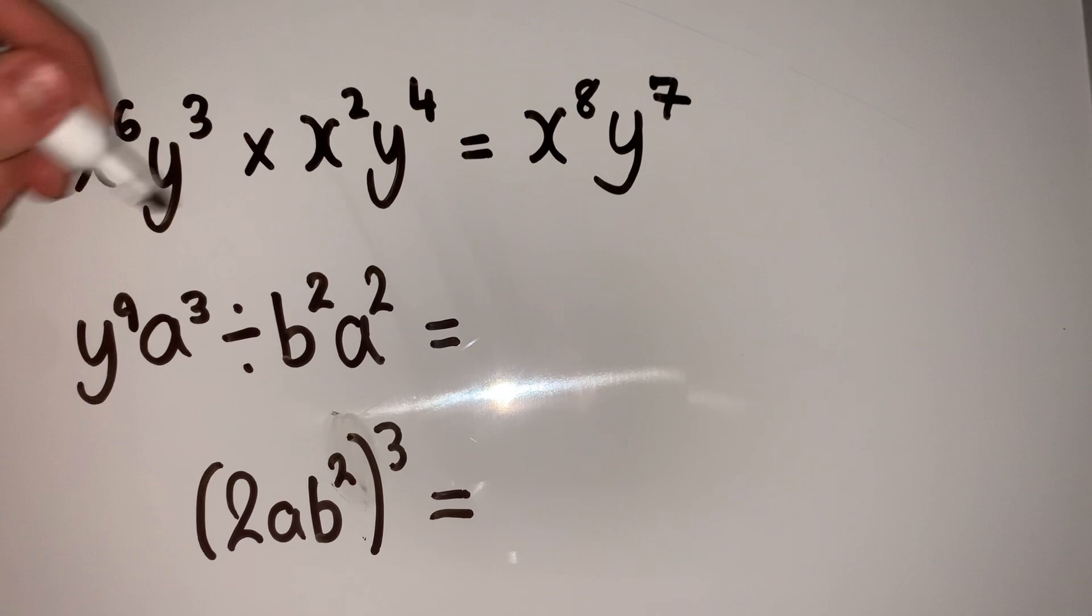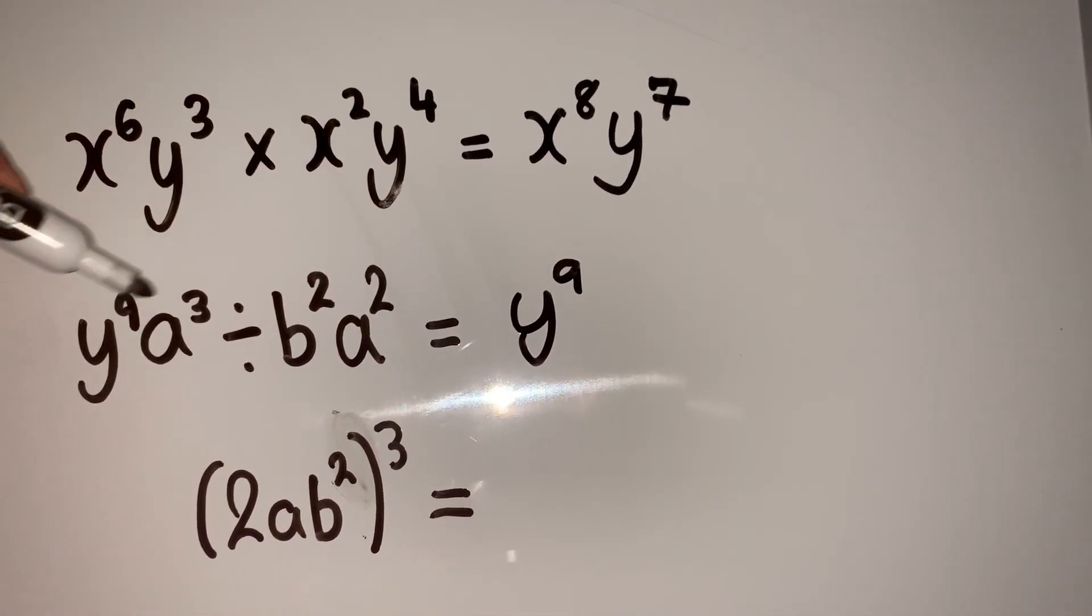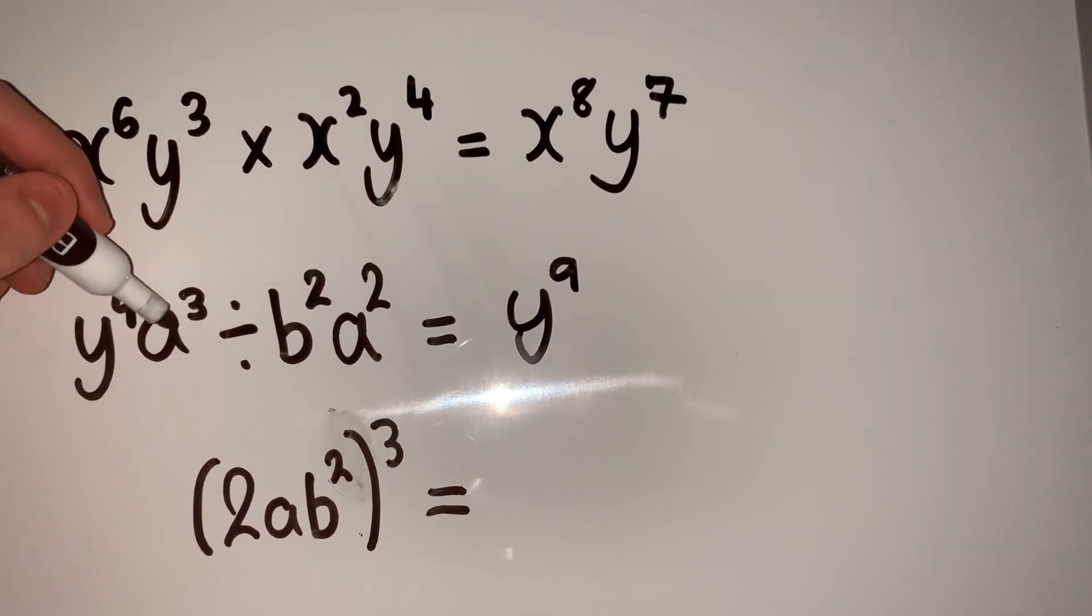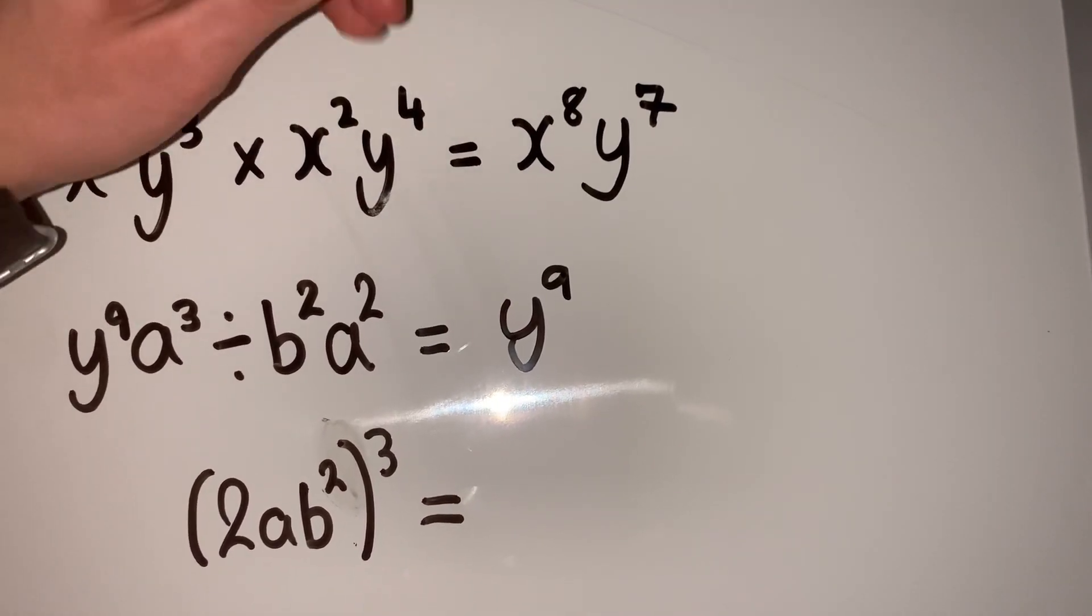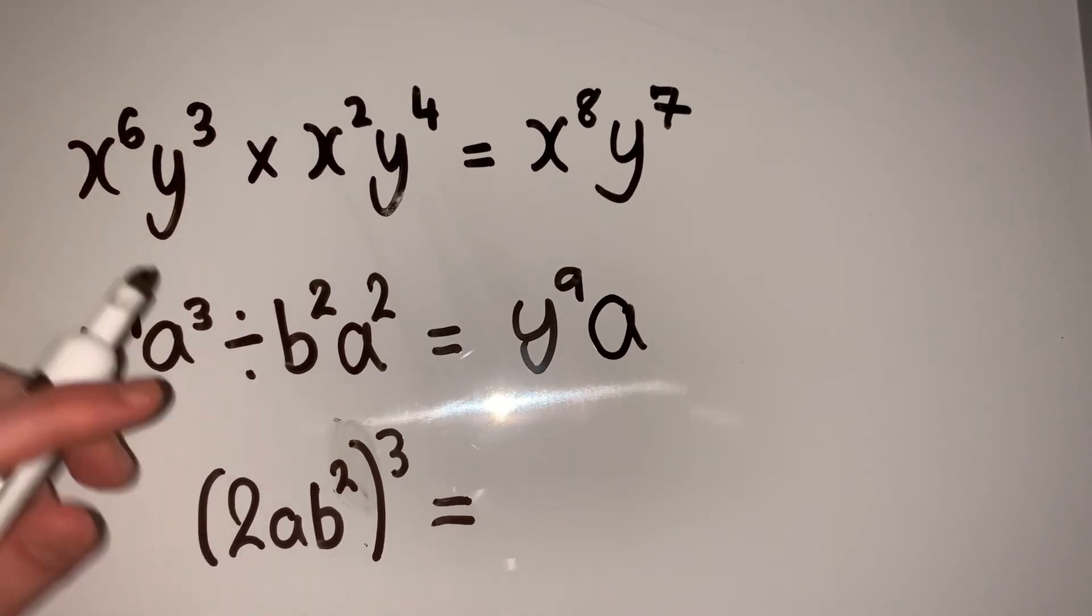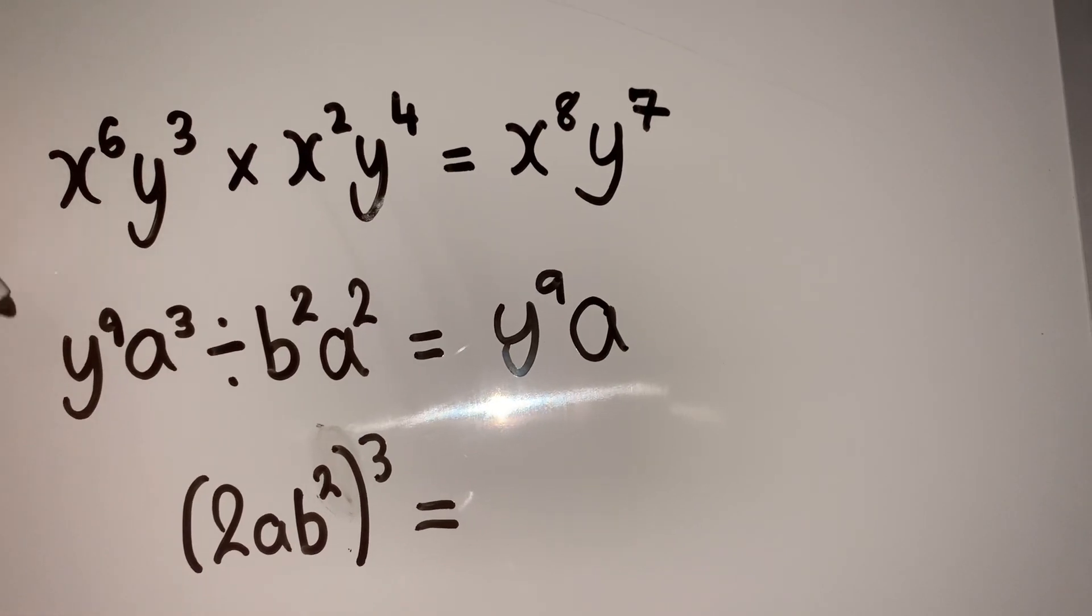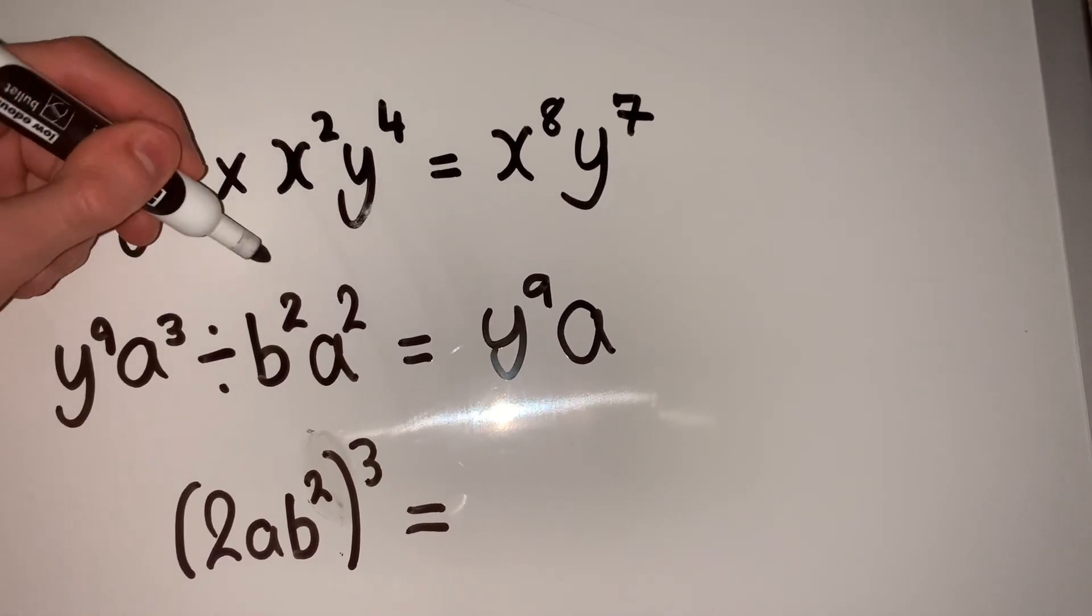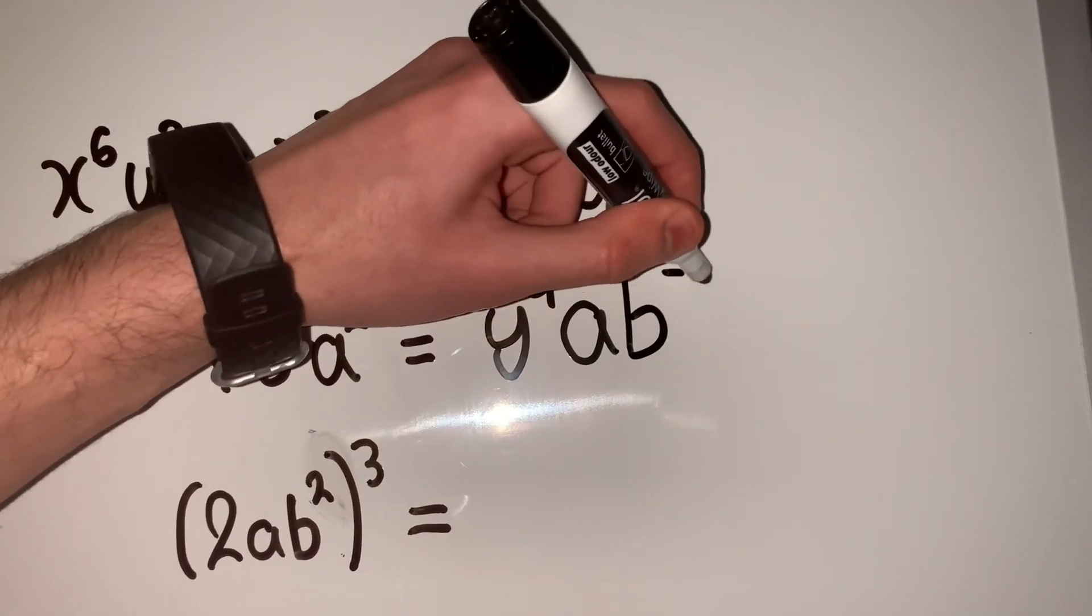For the next one, we have y^9*a^3 divided by b^2*a^2. For y, there's nothing to divide by, so it's 9 minus 0. a^3 divided by a^2 is a^(3-2), which is just a. For b, we have no b in the numerator, so 0 minus 2 gives us b^(-2).